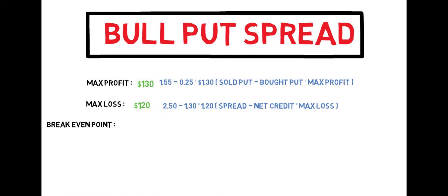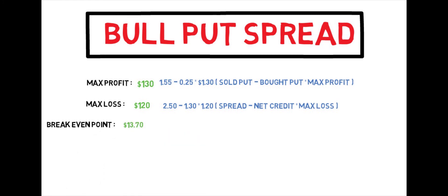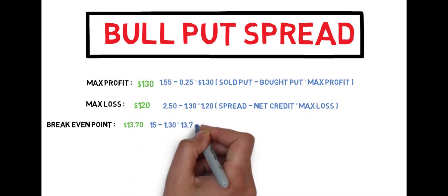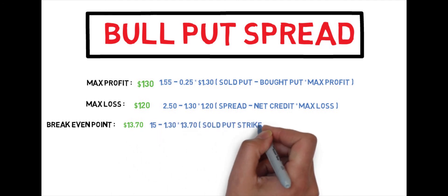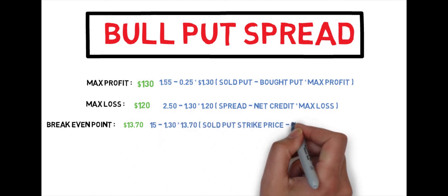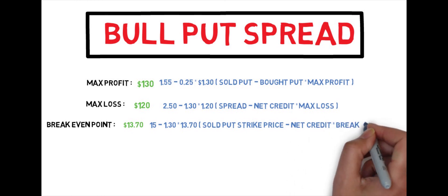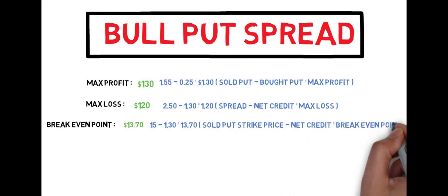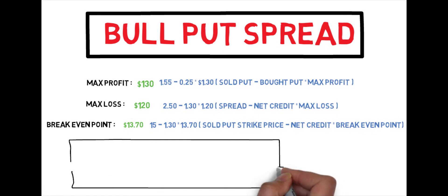So now you're going to want to find your break-even point, which is pretty easy to find. You take your strike price, which is $15, and you subtract that from your net credit, which is $1.30, which gives you $13.70 as your break-even point.